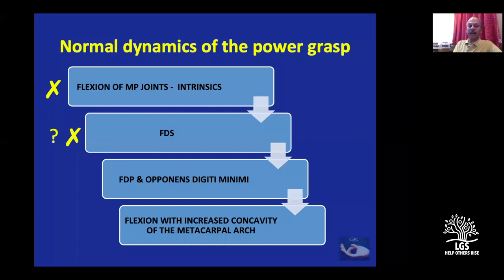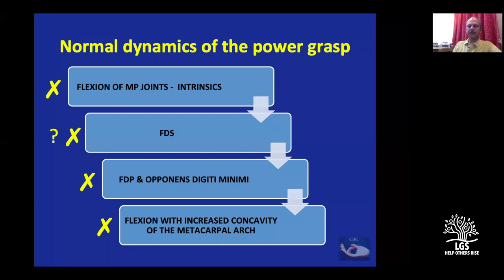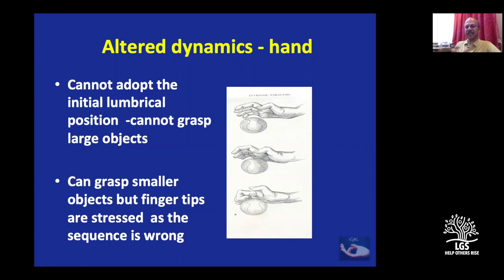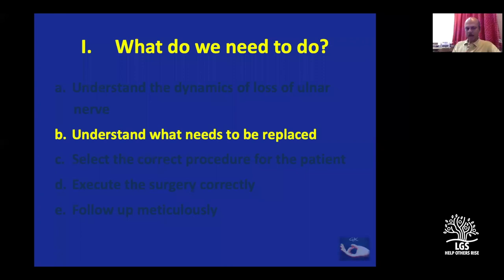The opponents digiti minimi is lost, and on the ring and little fingers the FDP is usually intact but may be lost in high ulnar nerve palsy. The flexion of the increased concavity of the metacarpal arch is lost because reversal of the metacarpal occurs. The patient cannot adopt the initial cupped position and cannot grasp large objects, so the power grip is lost. Trophic ulcers develop mainly on the tips of the fingers and on the metacarpal heads where pressure is maximum.